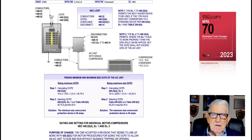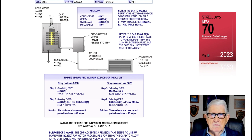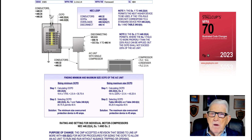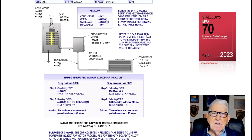This illustration deals with the rating and setting for an individual motor compressor in accordance with 440.22(A) Exception 1 and Exception 2. The purpose of the change was to let the user of the NEC know that you could raise the overcurrent device above 175% and even select it lower than 175%, but when you apply the 225% rule you'd have to round down — you couldn't round up. The calculation in the boxed information on the left shows you can round up above 175%, but using the 225% rule on the right, you cannot round up — you must round down. Notes 1 and 2 are letting you know you can do the same thing in section 440.22(A).